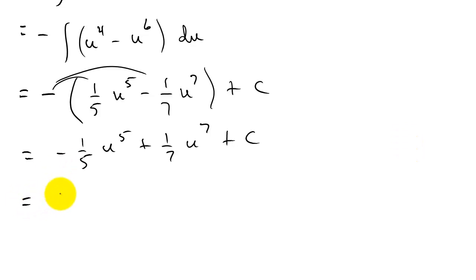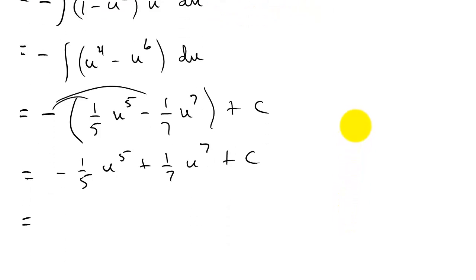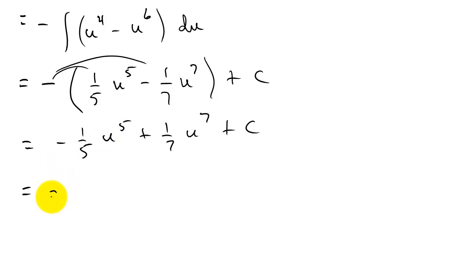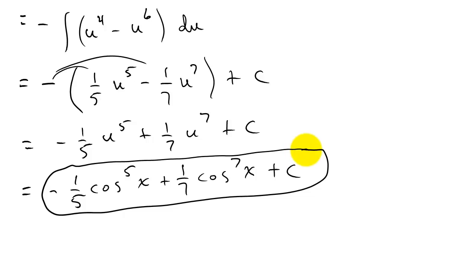Now I can't leave the answer in terms of u — I have to express it in terms of x. Since u equals cosine x, I'll substitute back to get negative one-fifth cosine to the fifth x plus one-seventh cosine to the seventh x plus C. This is our final answer. I'll have several more examples; I've decided to do one video per problem, so they'll be labeled example one, example two, example three. Check out those other videos if you need more, and I hope this helped.